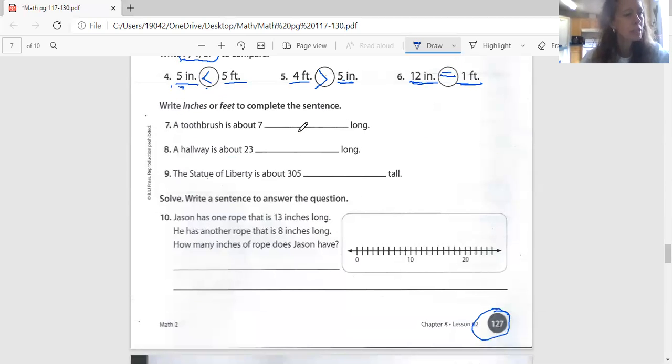And it's going to ask me, my next part, my directions say, write inches or feet to complete the sentence. We're going to try to guess how long something is, if it's this many inches or this many feet. Inches being here, feet being here. Keep that in mind. Are we measuring something long? It's probably going to be in feet. If we measure something small, it's probably going to be in inches. Let's have a look.